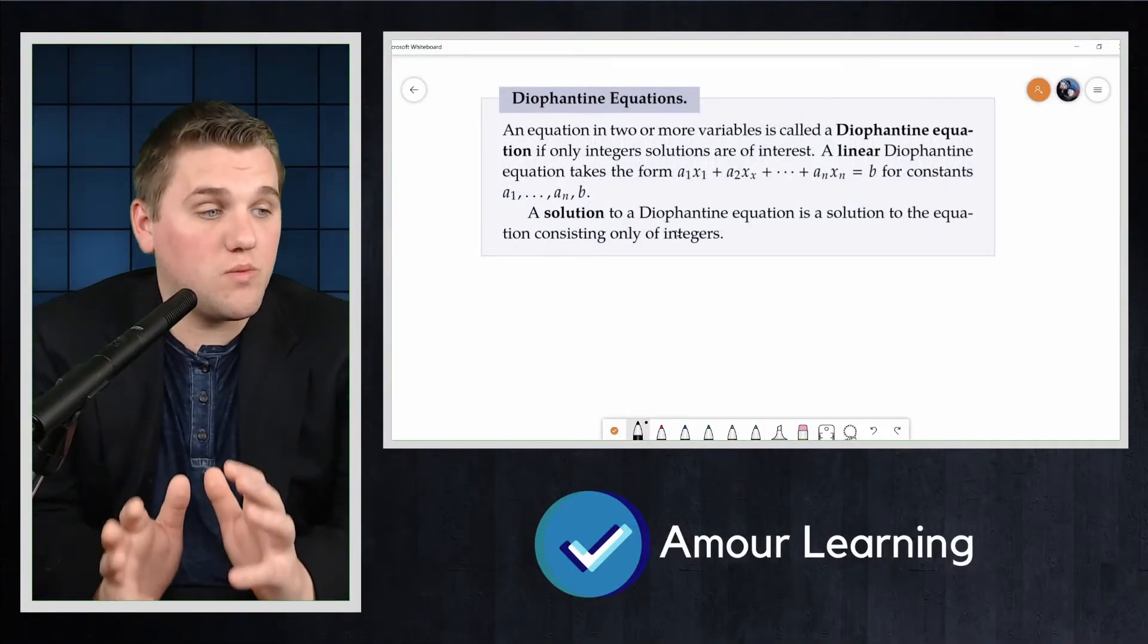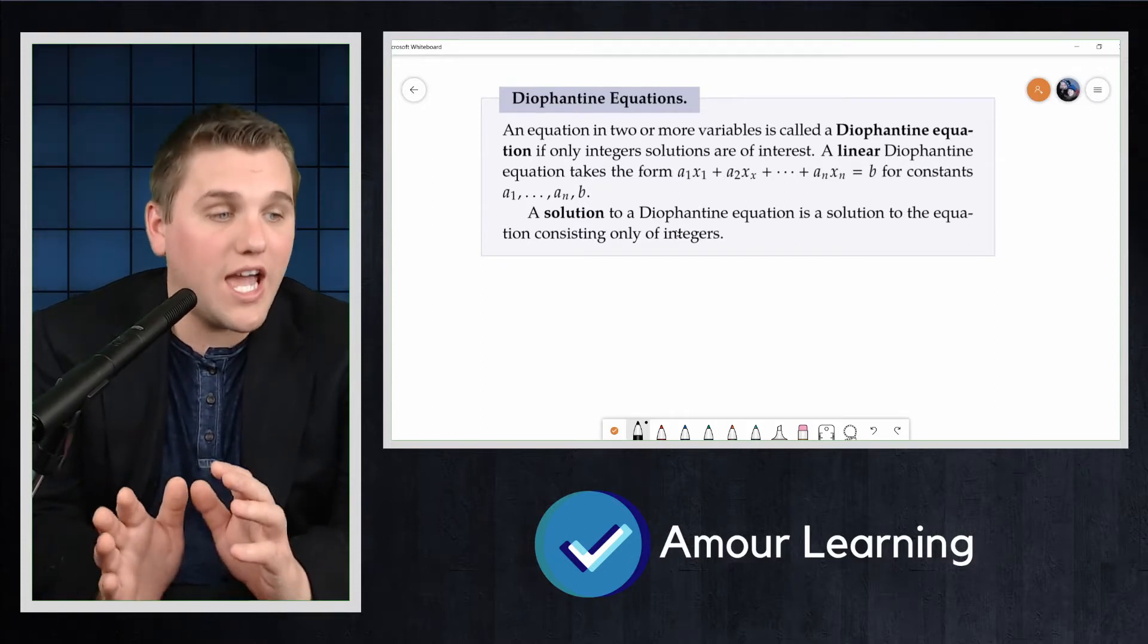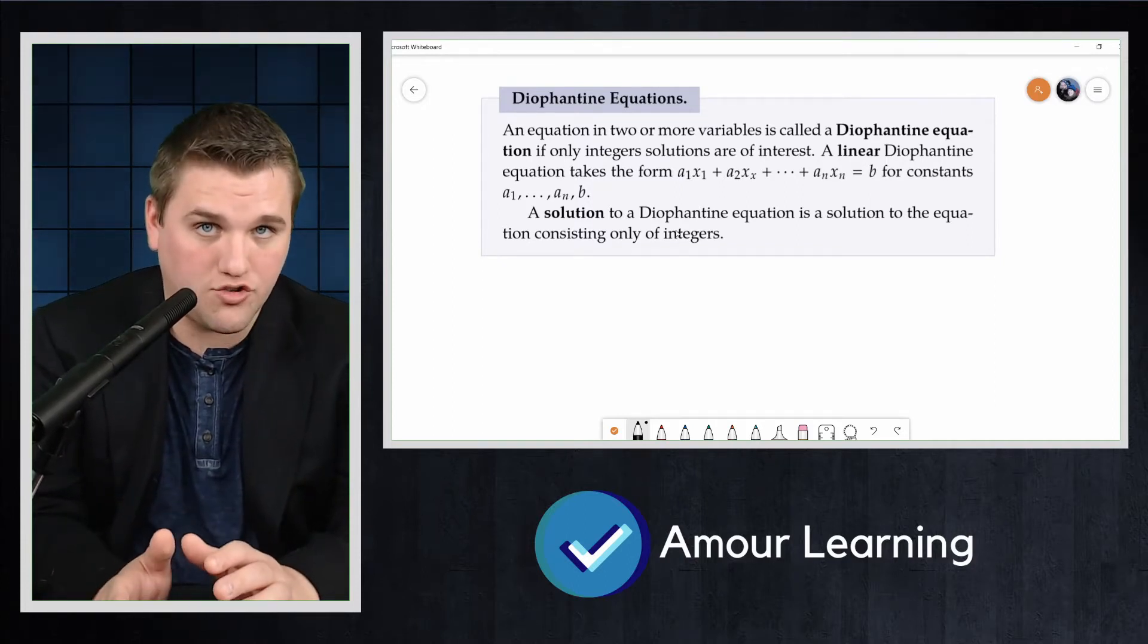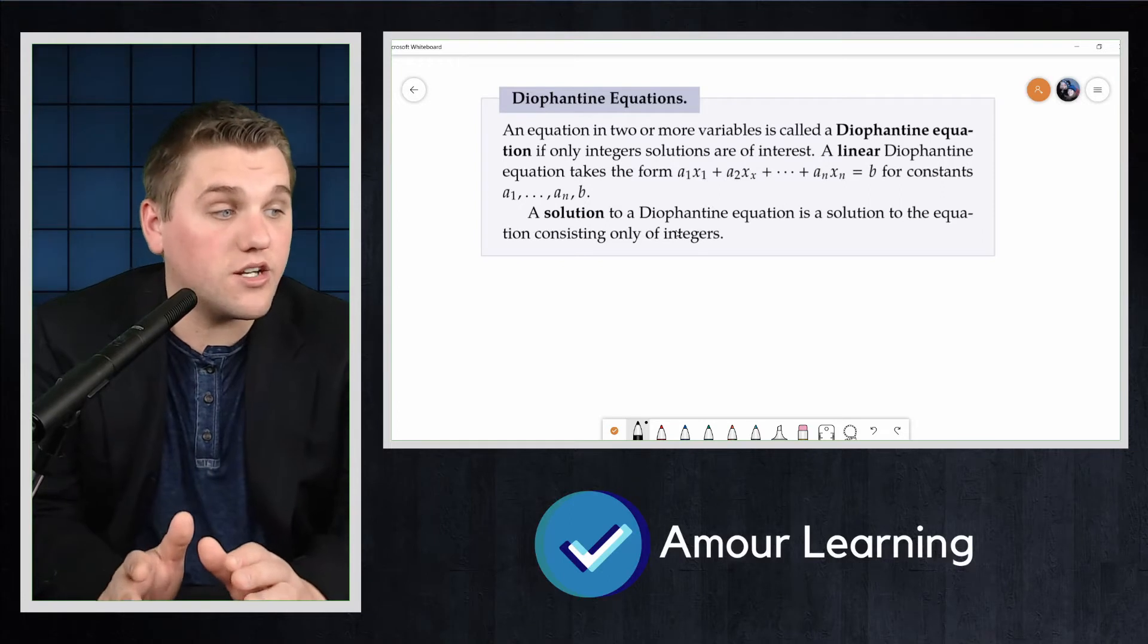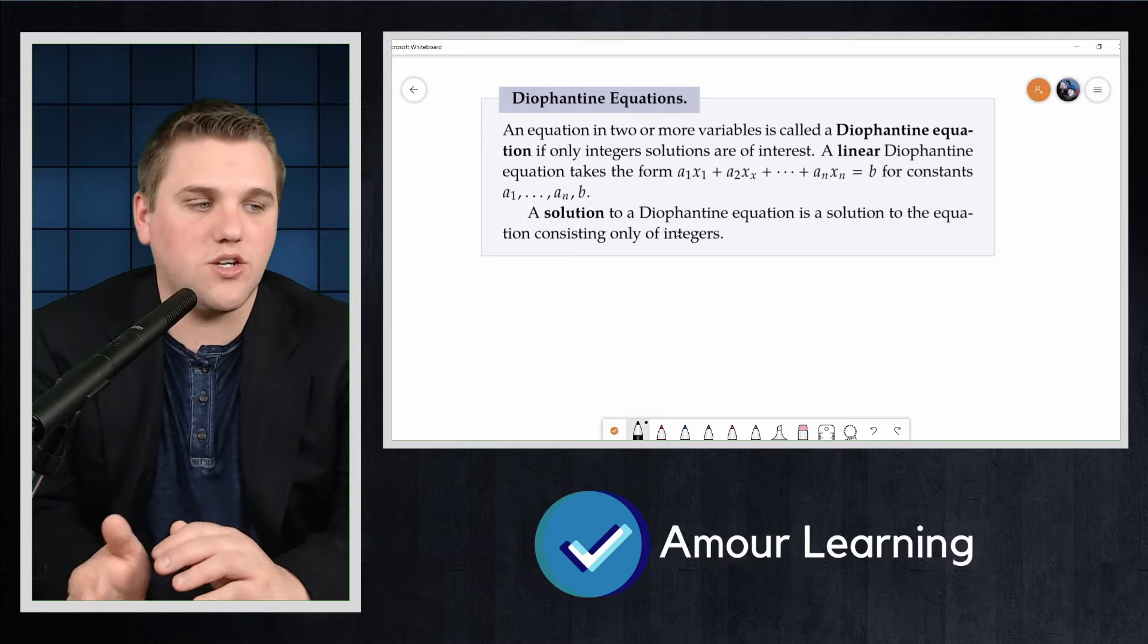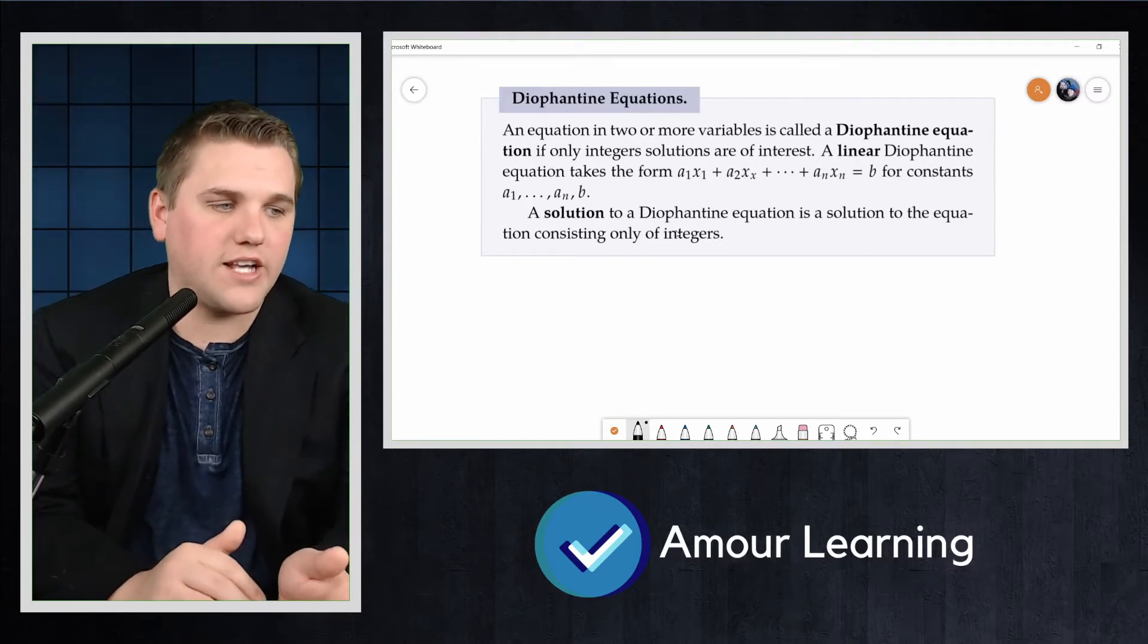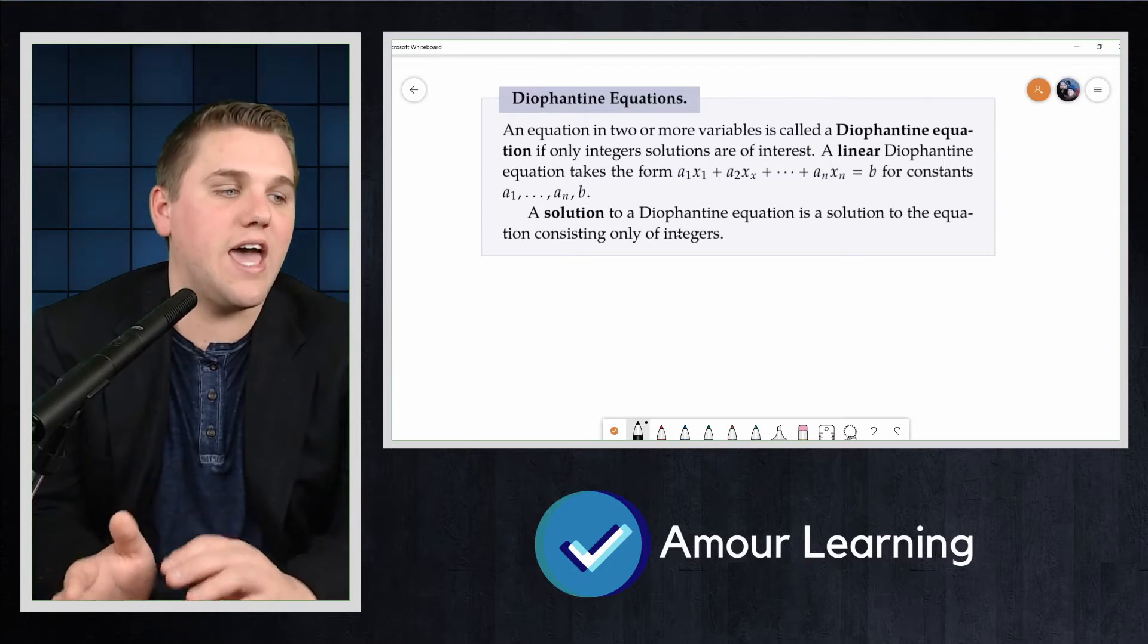An equation in two or more variables is called a Diophantine equation if only integer solutions are of interest. A linear Diophantine equation takes the form a1·x1 + a2·x2 + a3·x3 + ... + an·xn.